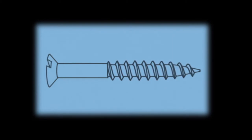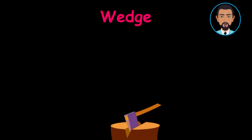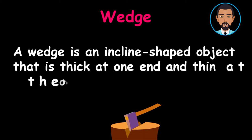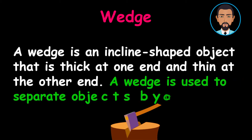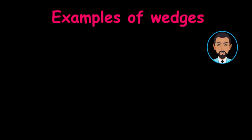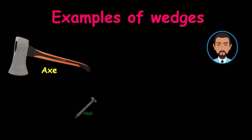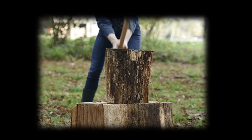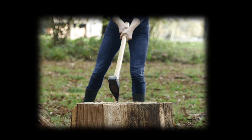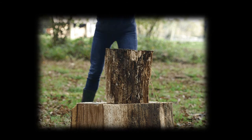Like screws, wedges are closely related to inclined planes. A wedge is an inclined shaped object that is thick at one end and thin at the other end. A wedge is used to separate objects by cutting, splitting, or piercing. Some examples of wedges include axe, nails, shovel, and knives. You really must be careful when using this group of simple machines. You can see the wood splitting and going in different directions.